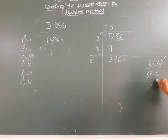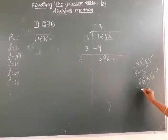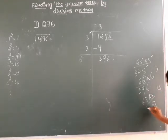So the next number is 6. 6 times 6 is 36. 66 times 6 is 396.